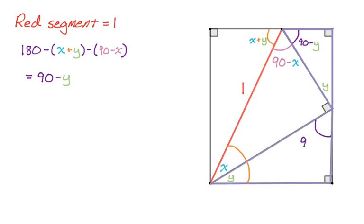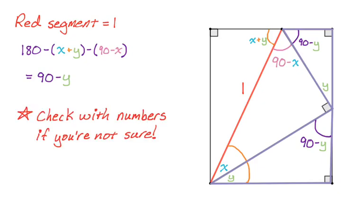This other angle here is also 90 minus y. So we actually have two triangles that have the same angles. We've got all of our angles down. Now we're going to start dealing with sides, lengths, and segments. An angle chasing technique — just sub in numbers, because if it works with variables it's got to work with everything. So if you're not sure about anything, just pick some numbers and go for it. You'll see that it does work out.